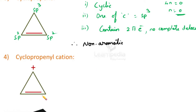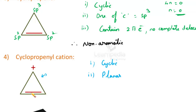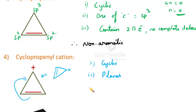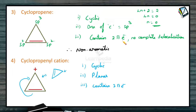Next: the cyclopropenyl cation. It is cyclic. It is planar because due to resonance, all carbon atoms are sp2 hybridized — the double bond is in conjugation with the positively charged carbon, and the positively charged carbon of a carbocation is sp2 hybridized. It contains the same 2 pi electrons as cyclopropene, but now in complete delocalization. With 4n+2 = 2 giving n = 0, it obeys Huckel's rule. So the cyclopropenyl cation is aromatic in nature.